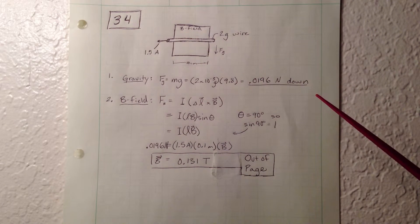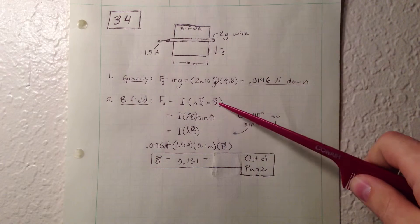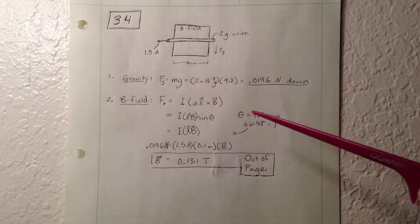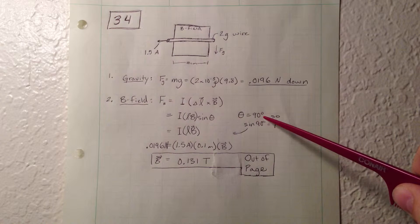And we know from a basic trigonometric identity that that can be transformed into ILB sine theta. And we know, using our right-hand rule, that theta is 90 degrees.